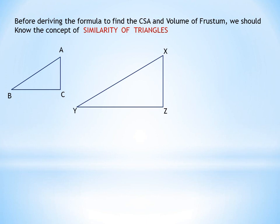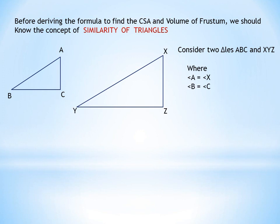Let us consider two right-angled triangles ABC and XYZ. When angle A equals angle X and angle B equals angle Y, all three angles of triangle ABC equal the corresponding angles of triangle XYZ. By angle sum property, angle C equals angle Z. If all three angles of one triangle equal the corresponding angles of another triangle, the two triangles are said to be similar. Therefore, triangle ABC is similar to triangle XYZ.